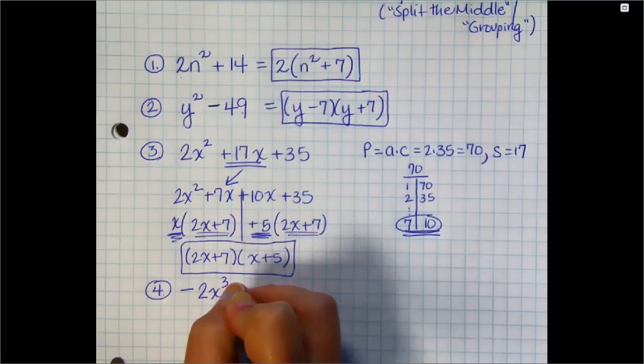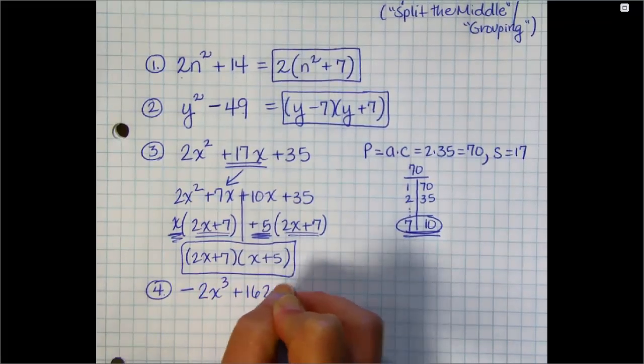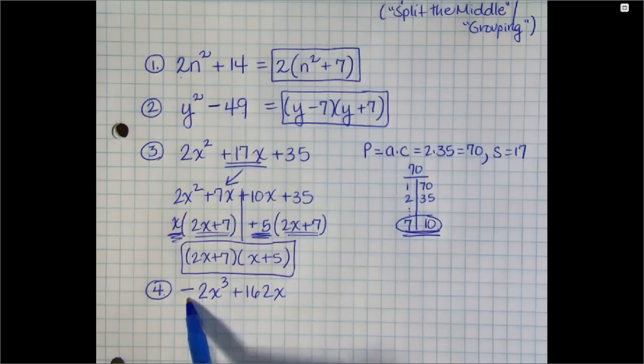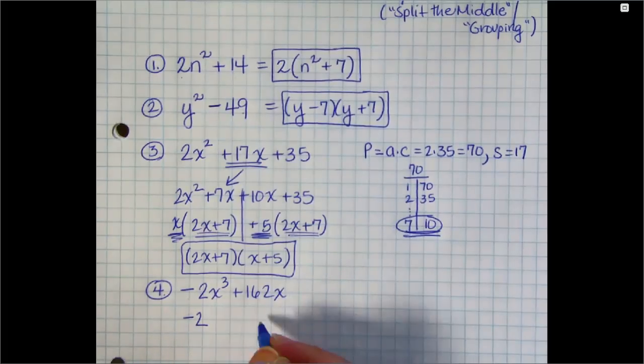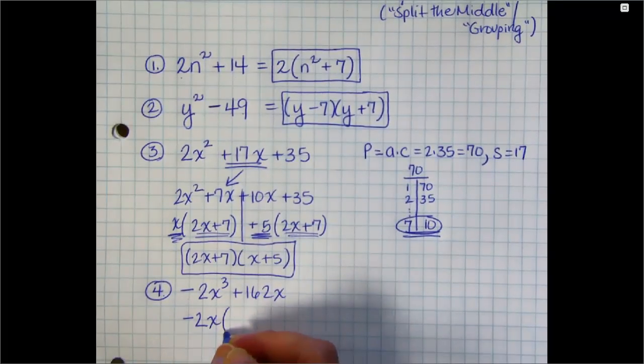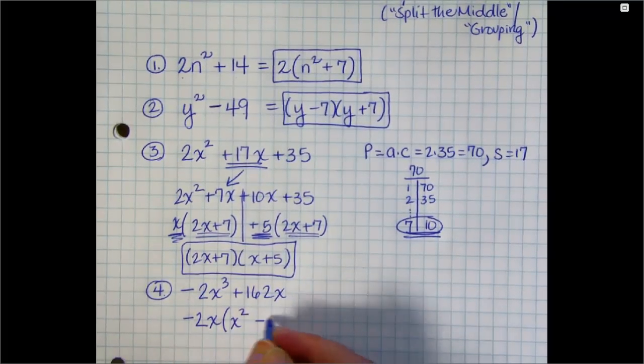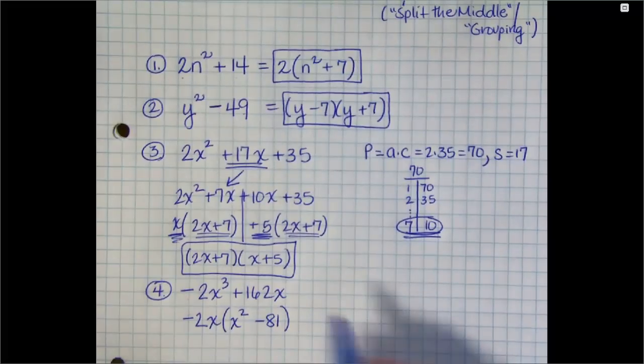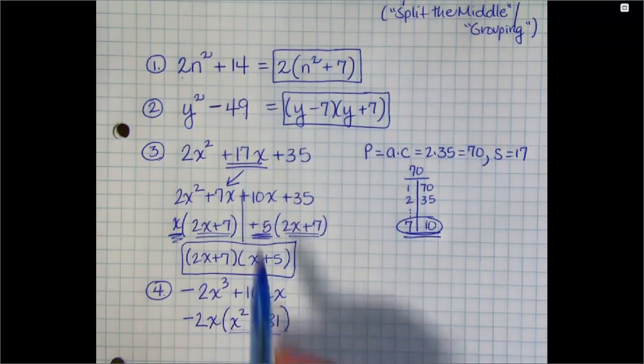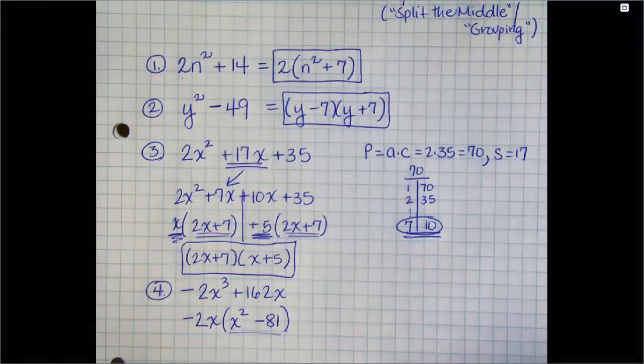So let's factor negative 2x cubed plus 162x. Well, I don't like any negatives, so I'm going to pull that out as something common. And 2x also divide into the polynomial. So I've got negative 2x as a common factor, and I'm left with x squared minus 81.